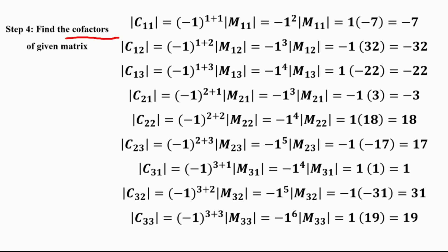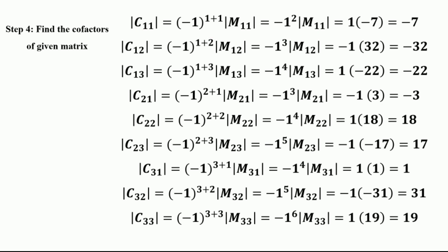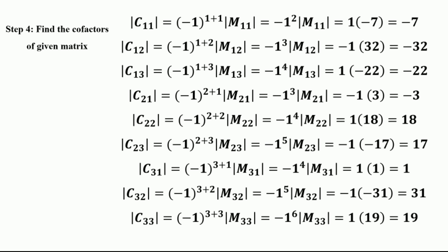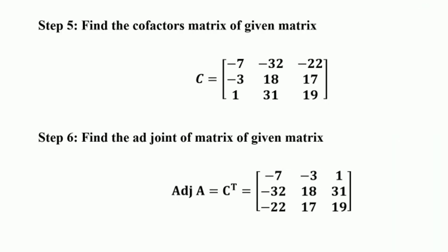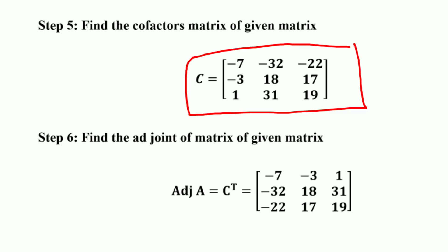After finding the minors, we find all cofactors. C₁₁ = (−1)^(1+1) × (−7) = −7. C₁₂ = (−1)^(1+2) × 32 = −32. Computing all remaining cofactors similarly, the cofactors are: −7, −32, −22, −3, 18, 17, 1, 31, 19. The cofactor matrix is therefore [−7, −32, −22; −3, 18, 17; 1, 31, 19].